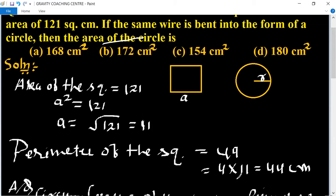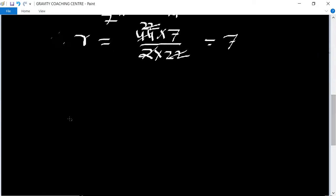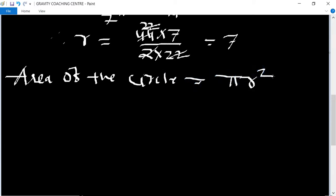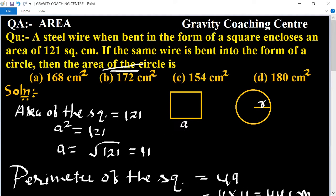Now find the area of the circle. Area of the circle equals πr². So it equals 22 upon 7 into 7 into 7. 7 cancels, so 22 into 7 equals 154 cm². The answer is option C, which is the right answer.